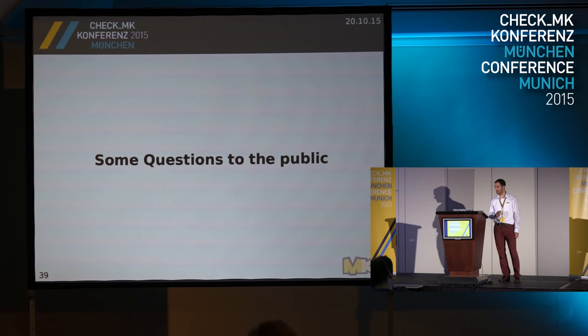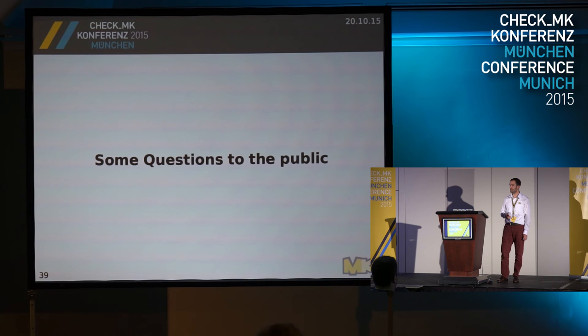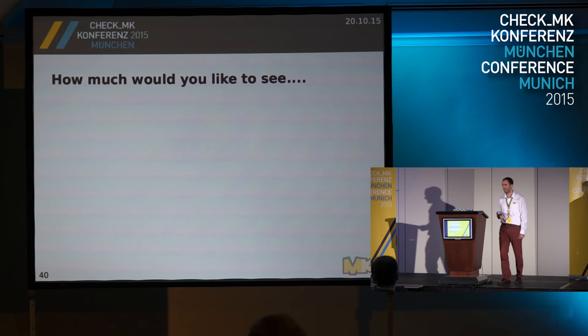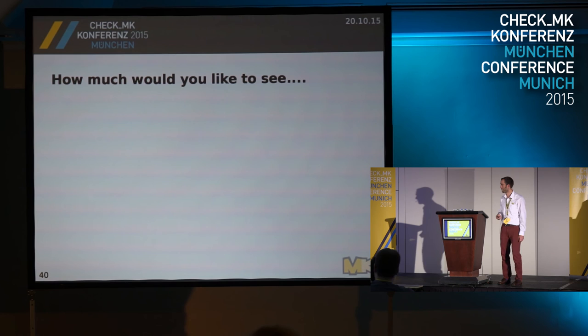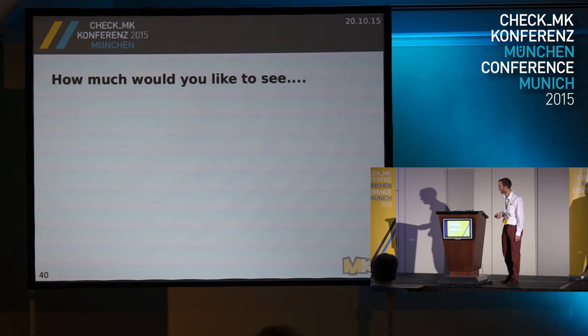I'm really excited about what's going to come. Lars asked me to present some questions to you. We're talking about appliances. I'd like to make a survey — those of you who think a feature I'm presenting would be something you'd like to see, please raise your hand and Bastian will take a picture for Lars to count the hands. First question: would it be a good idea to have a Rack 2 appliance with a lot more processing power — like 16 cores, 32 gigs of RAM? Who would like to see that?